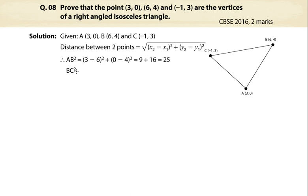Let's find BC square. Let's put the values in the formula and simplify. Therefore, BC² = 50.